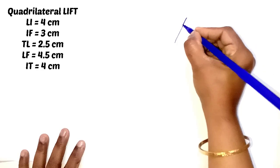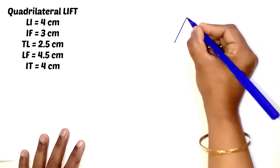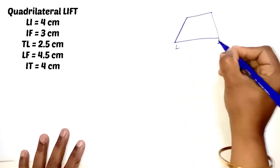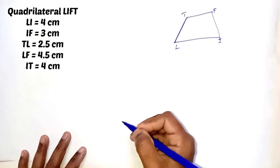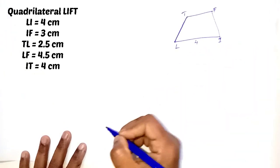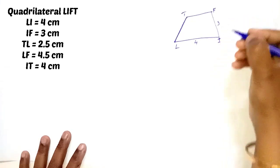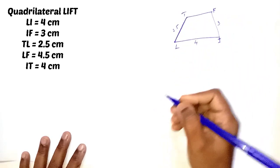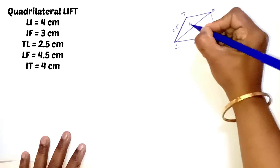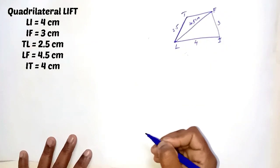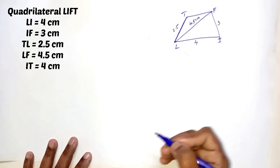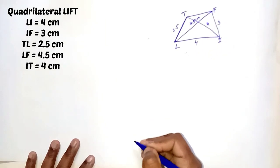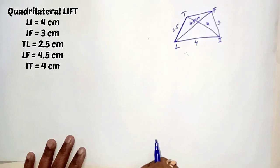First, you have to draw the rough sketch of quadrilateral LIFT. What is given: LI is equal to 4 cm, IF is equal to 3 cm, TL is equal to 2.5 cm, and LF is equal to 4.5 cm — one diagonal. IT is equal to 4 cm. So two sides and two diagonals — three sides and two diagonals are given.